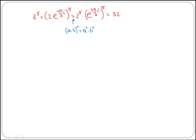2 to the 5 is simply 32. For the second part, we use another index property: a to the n, everything to the power of m, means we multiply the exponents. Applying this, we multiply the exponents and get e to the power of 20π over 3 i.